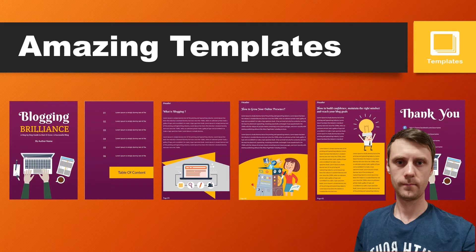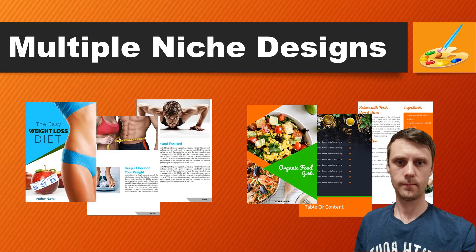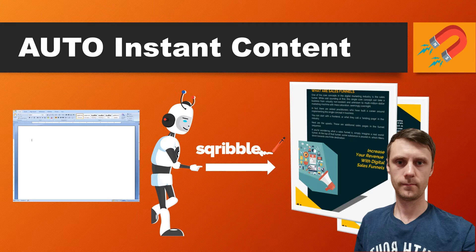There are all different types of themes, feels, and styles for any type of project. In fact, there are designs for all types of niches, so whatever your industry, there are going to be templates inside with lots of different designs for you. This is a massive feature of Scribble — it will allow you to populate your entire e-book with automatic instant content.